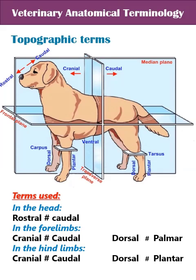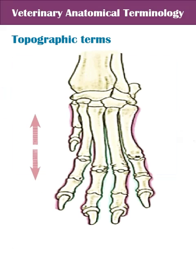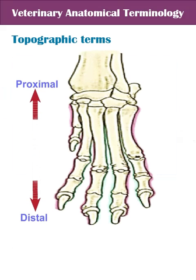In the head and eye, we use rostral instead of cranial. In the limbs, from the level of carpus or tarsus, dorsal refers to the back, palmar to the palm, and plantar to the sole. Proximal means close to the trunk, while distal means moving away.